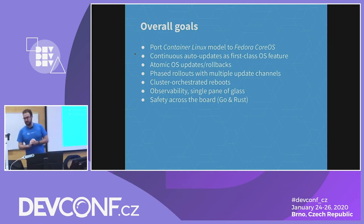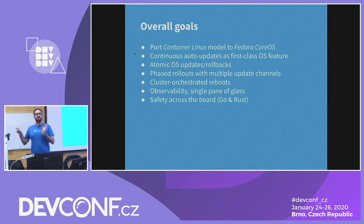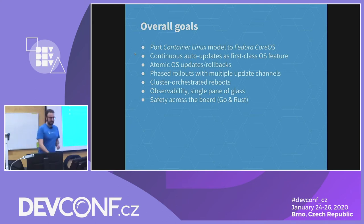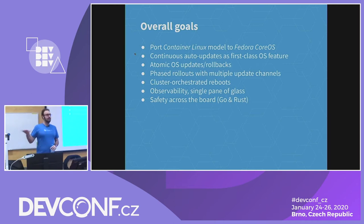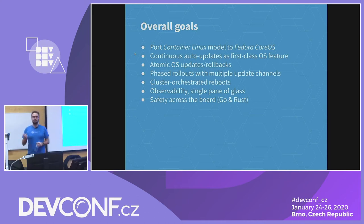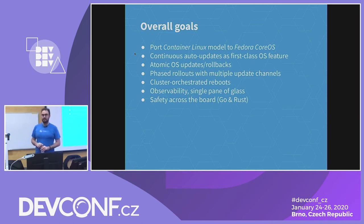All the components we're going to describe are mostly new software based on ideas we already had, and we try to push for making the whole Linux and CoreOS ecosystem safer from a memory safety perspective. So we opt into newer languages rather than the old incumbents like C and C++. Most of the software I'll show you is either written in Go or Rust.